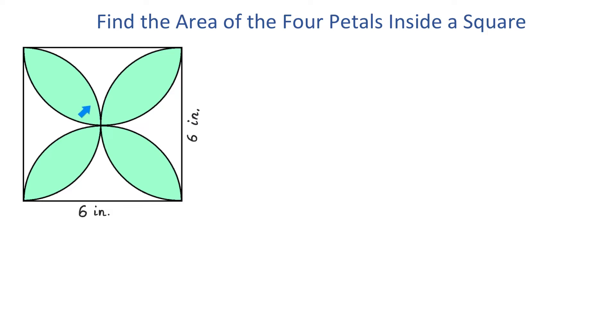In this figure we have 4 petals inside of a square and each side of this square is 6 inches. Each petal is formed by the intersection of 2 semicircles.